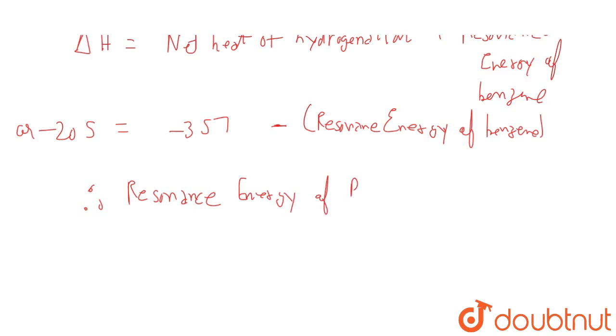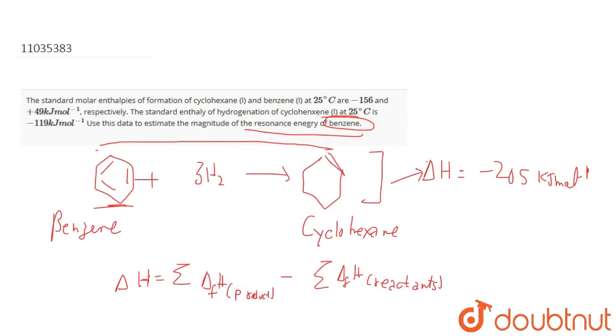Therefore, the resonance energy of benzene from here we can easily calculate, and after further calculation is minus 152 kilojoules per mole. So the net resonance energy of benzene is minus 152 kilojoules per mole. This is the final solution for this question.